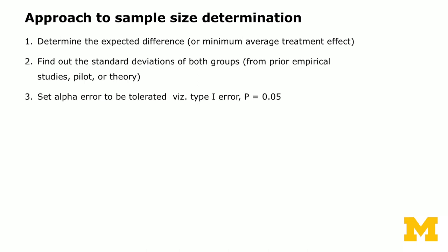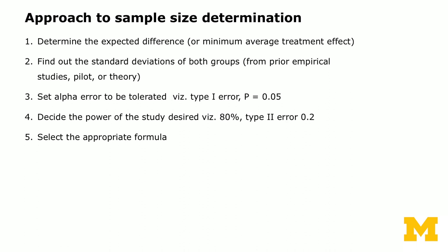Third, set the alpha error — type one error — to be tolerated before you start. The convention is 5 percent, though you can set it at 2 or 1 percent; the smaller the type one error, the larger the required sample size. Fourth, decide the power of the study — we typically use 80 percent, though replication studies may require 90 or 95 percent power, meaning type two error of 20, 10, or 5 percent respectively. Then select the appropriate formula to calculate the sample size; most statistical software packages let you plug in these parameters and will calculate it for you.